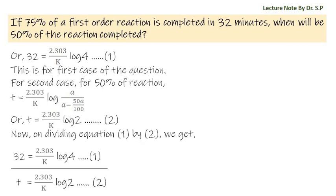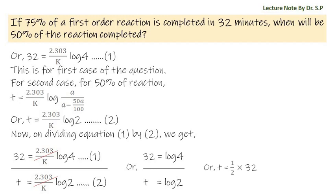Now, on dividing equation 1 by equation 2, we get 32 over T is equal to (2.303 by k times log 4) divided by (2.303 by k times log 2). Here 2.303 by k cancels out, so we get 32 over T equals log 4 by log 2, which equals 2. Therefore T is equal to 1 by 2 times 32, or T is equal to 16 minutes. This is the required answer: after 16 minutes, 50% of the reaction will be completed.